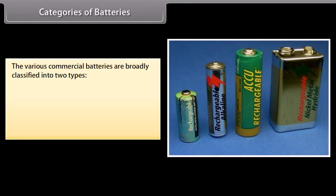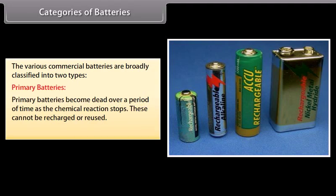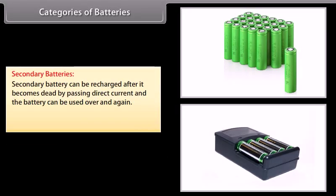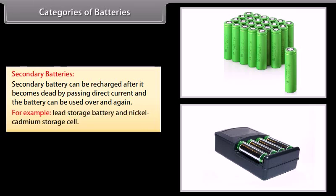Categories of batteries. The various commercial batteries are broadly classified into two types. Primary batteries become dead over a period of time as the chemical reaction stops. These cannot be recharged or reused. For example, dry cell and mercury cell. Secondary battery can be recharged after it becomes dead by passing direct current, and the battery can be used over and again. For example, lead storage battery and nickel-cadmium storage cell.